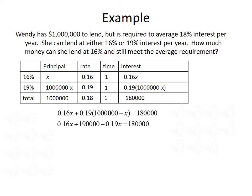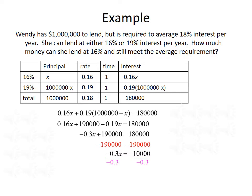Now we need to solve this for X, so we will distribute the 0.19 throughout the parentheses, giving us 0.16X plus 190,000 minus 0.19X equals 180,000. We can combine like terms on the left-hand side: 0.16X minus 0.19X gives us negative 0.03X. So negative 0.03X plus 190,000 equals 180,000. We subtract 190,000 from both sides, so negative 0.03X equals negative 10,000.